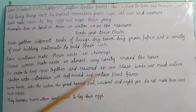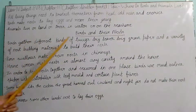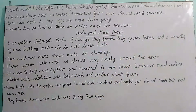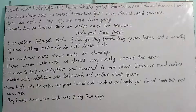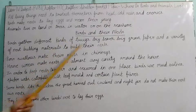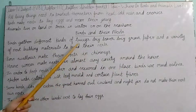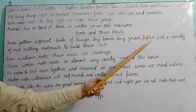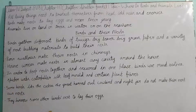Now we are going to talk about birds and how they make their nests. Birds gather different kinds of twigs, dry leaves, dry grass, paper, and a variety of other materials that can be useful to make their nests. They collect these things — small wood, dry leaves, dry grass, paper, and other suitable materials — to make their shelter.